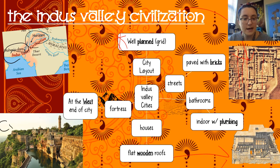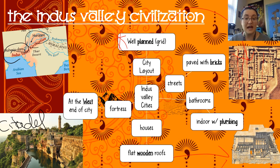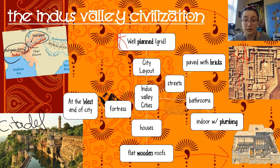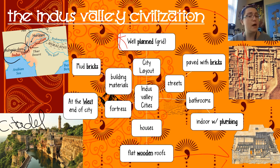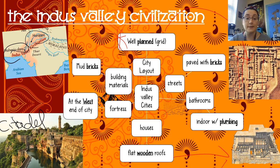Another word for this fortress is the citadel — C-I-T-A-D-E-L — and I want you to write that word in by the word fortress. So we know that they planned ahead for attacks and military. They used all sorts of mud bricks for building materials that would bake in the hot sun and be well preserved.